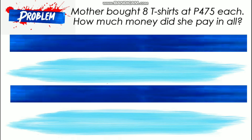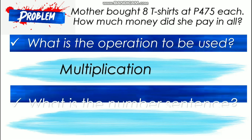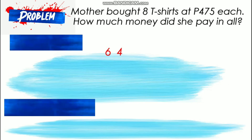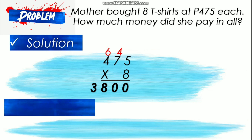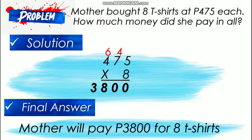Next question: what is the operation to be used? The operation that will solve the problem is multiplication. What is the number sentence? Since we are using multiplication, the number sentence is written as 475 times 8 is equal to N. Let us proceed to showing the solution — multiply the numbers, and the answer is 3,800. In indicating the final answer, label your answer. Mother will pay 3,800 pesos for 8 t-shirts.